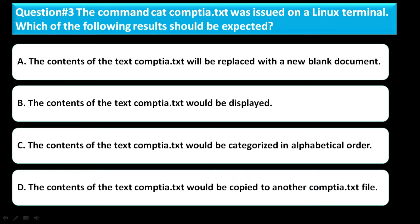Question number three: the command 'cat comshare.txt' was issued on a Linux terminal. Which of the following results should be expected? Option A: the contents of comshare.txt will be replaced with a new blank document. Option B: the contents of comshare.txt would be displayed. Option C: the contents of comshare.txt would be categorized in alphabetical order. The correct answer is option B — the contents of comshare.txt would be displayed.